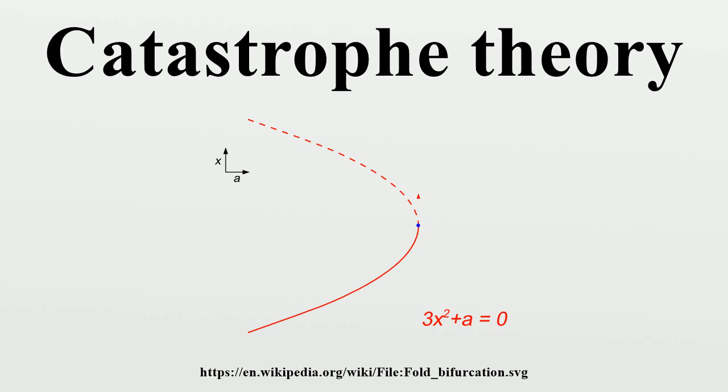Bifurcation theory studies and classifies phenomena characterized by sudden shifts in behavior arising from small changes in circumstances, analyzing how the qualitative nature of equation solutions depends on the parameters that appear in the equation. This may lead to sudden and dramatic changes, for example the unpredictable timing and magnitude of a landslide.